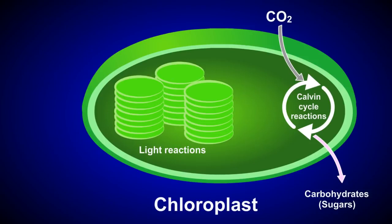The Calvin cycle reactions occur within the stroma of the chloroplast. The reactions use the ATP and NADPH produced by the light reactions to convert the CO2 to carbohydrate.